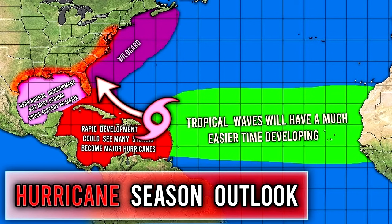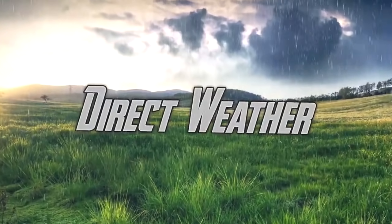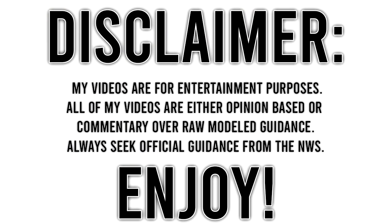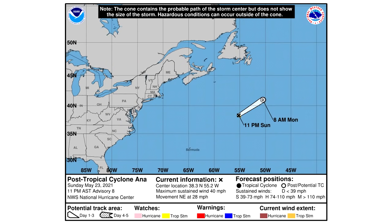Hello everyone! In today's video we're going to be talking about the updated hurricane season forecast, going over everything including some data on an actual storm we've already had. We've officially had tropical cyclone Anna, so for today's comment of the day I want to know: when do you think we will have our next tropical cyclone, tropical storm, or hurricane? Hopefully not a hurricane this early — let me know in the comments below.